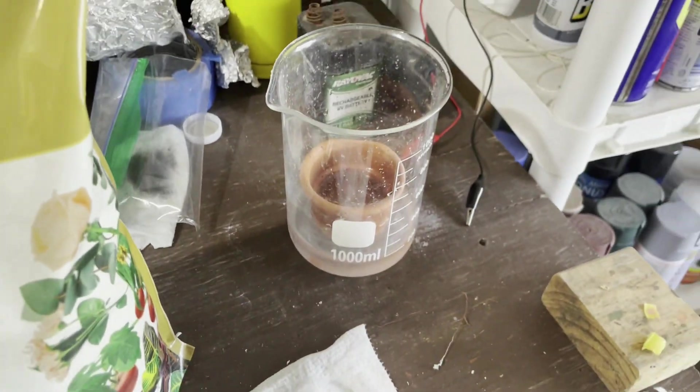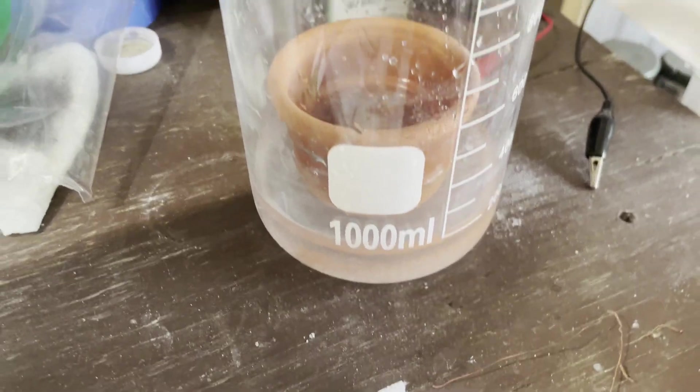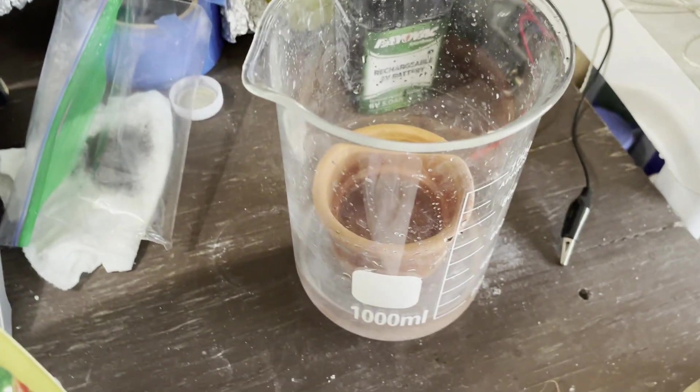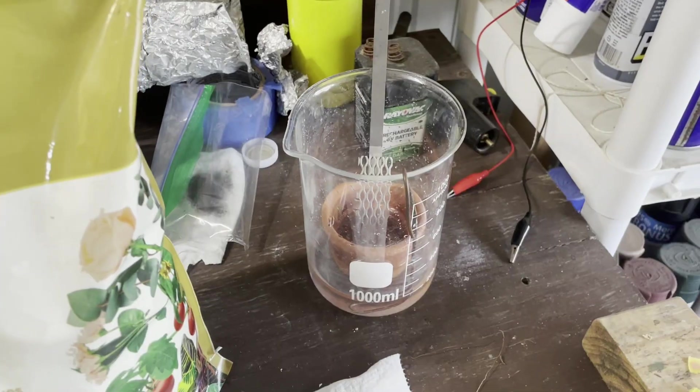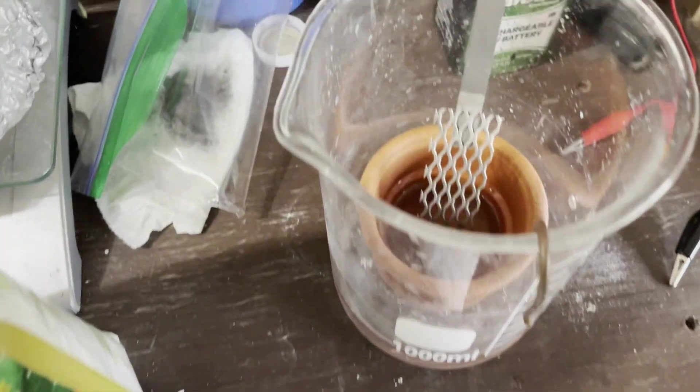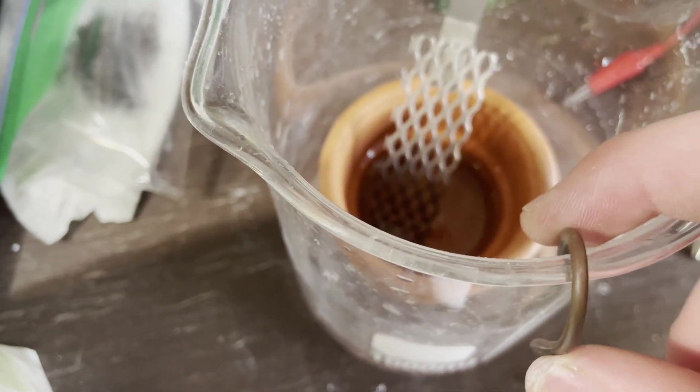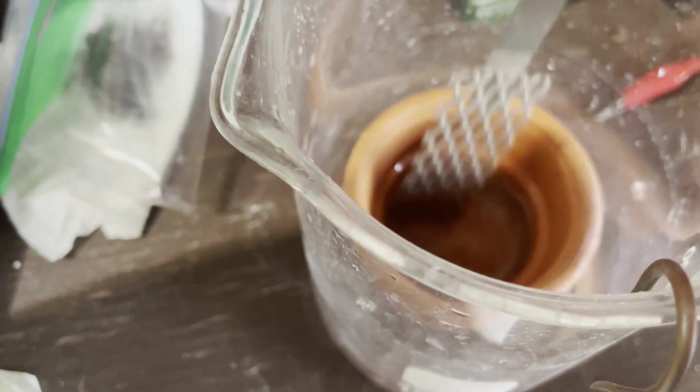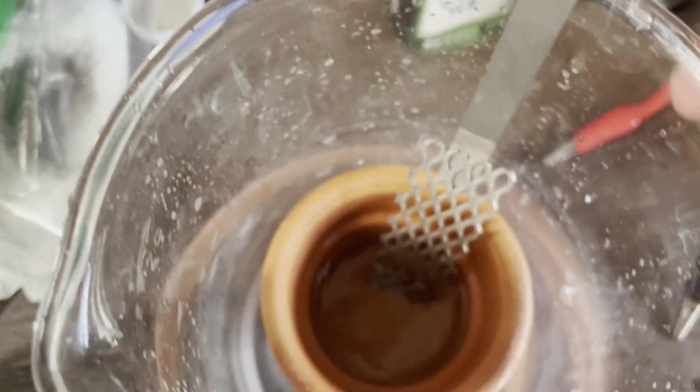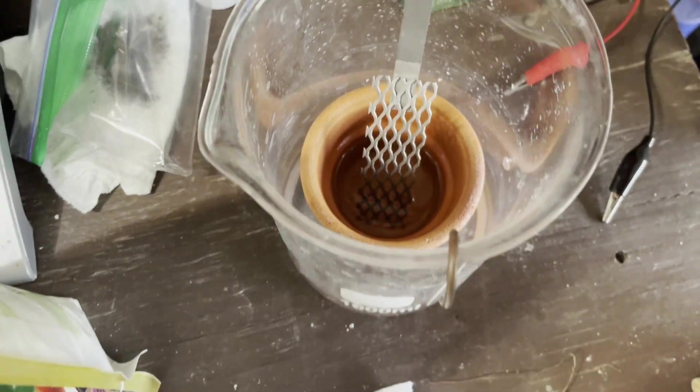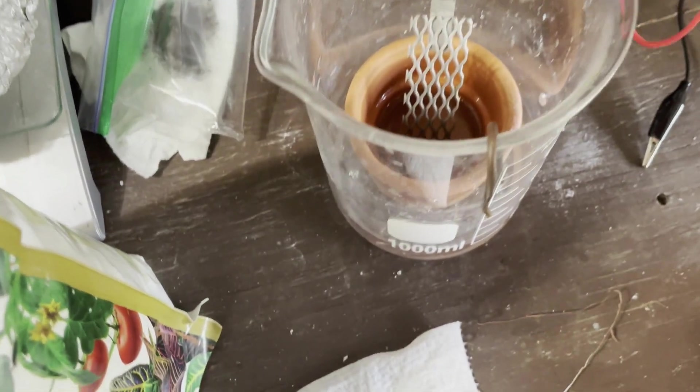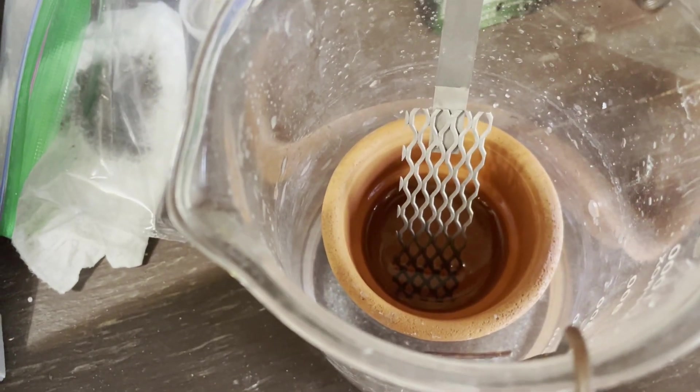The pot is still able to be crossed through by ions, but not the solutions themselves. So what this leaves us with is our Epsom salt solution with our copper electrode, and our acid solution with our positive electrode.